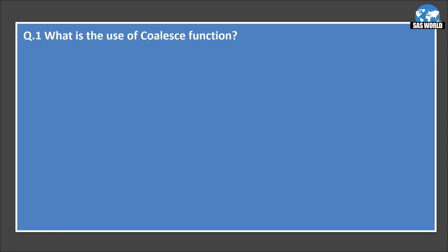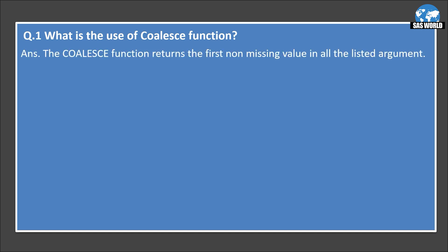Here is the first question: What is the use of the COALESCE function? This question is mostly asked in SAS interviews when someone asks a question on functions. The COALESCE function returns the first non-missing value in all the listed arguments. Let's understand this by an example.